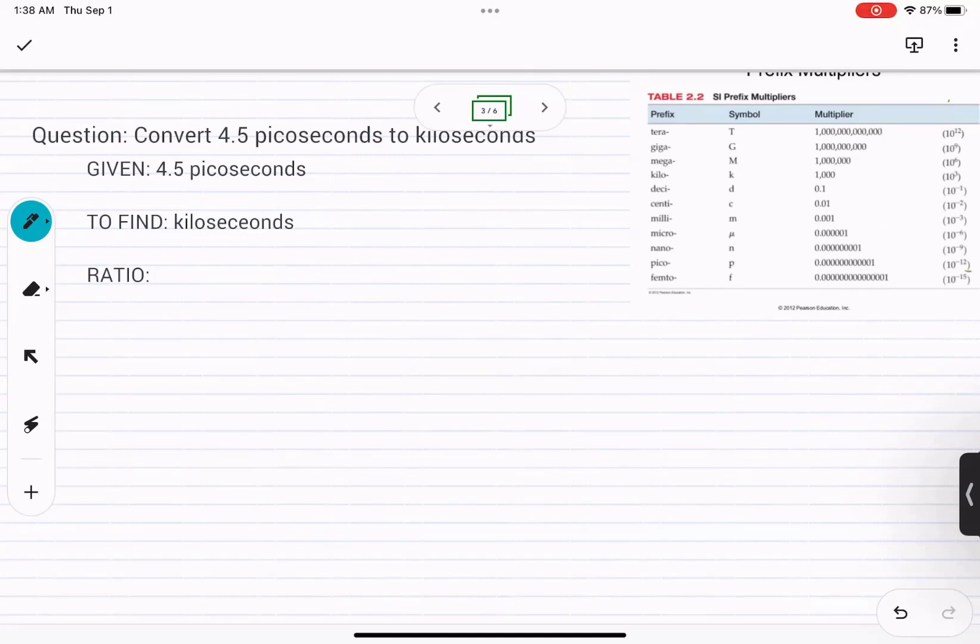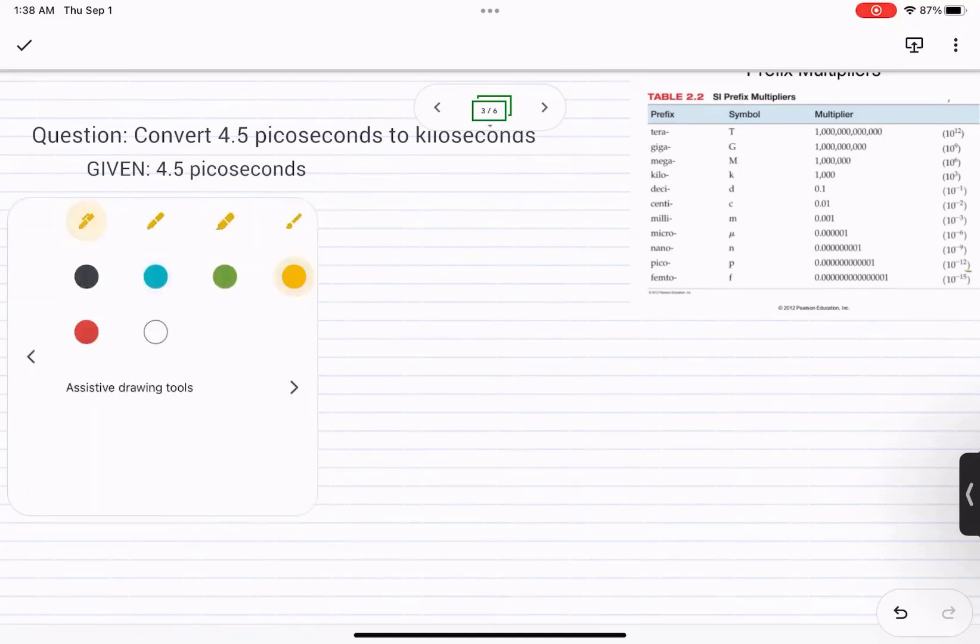So in this example, we are going from picoseconds to kiloseconds. Now, if you look at this chart, you're going to see that there is no relationship between picoseconds and kiloseconds.